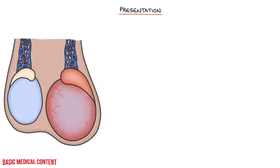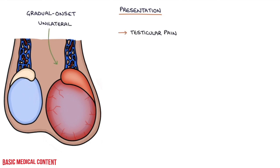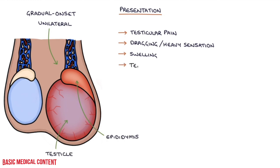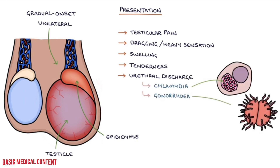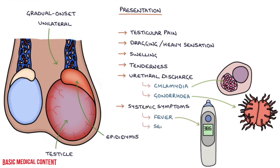Let's talk about the presentation. Epididymo-orchitis typically presents with a gradual onset over minutes to hours with unilateral testicular pain, a dragging or heavy sensation in the testicle, swelling of the testicle and swelling of the epididymis, tenderness on palpation particularly over the epididymis, urethral discharge — which should make you think about chlamydia or gonorrhea — and systemic symptoms such as fever and potentially sepsis.